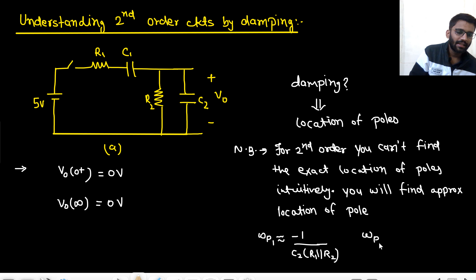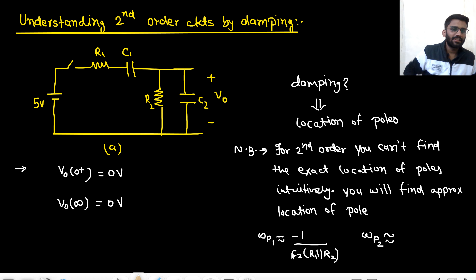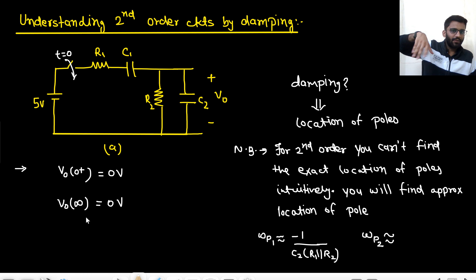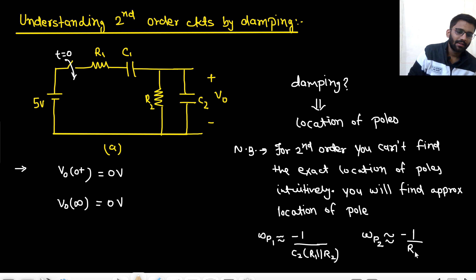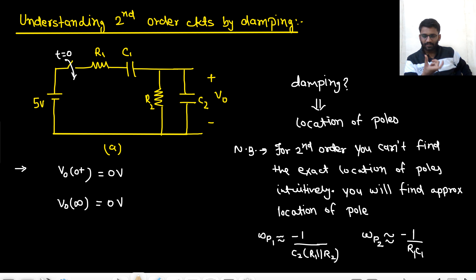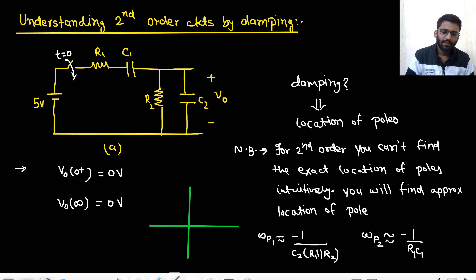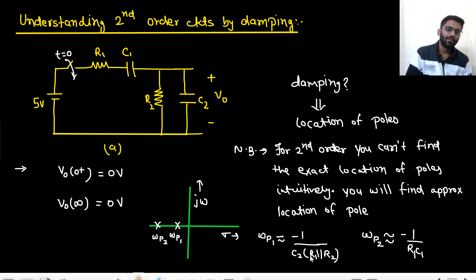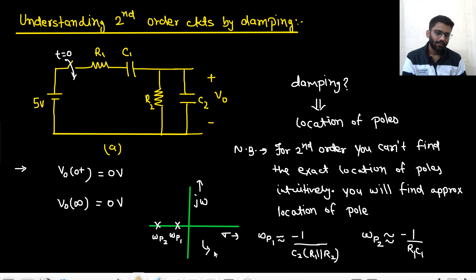These two poles are unequal. In the S-plane, with sigma and j-omega axes, there are two unequal poles omega_P1 and omega_P2 on the negative real axis. Their exact positions depend on R1, R2, C1, C2. Since the two poles are different and unequal, this is an over-damped system. The response will start from 0 and go to 0.